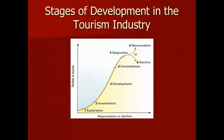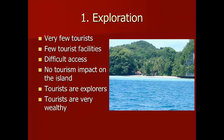Economists have identified six stages. The first stage is exploration, the second is involvement, the third is development, the fourth is consolidation, the fifth is stagnation, and then a sixth stage where tourism can either rejuvenate itself, stay the same, or go into decline. Let's go through them one by one.